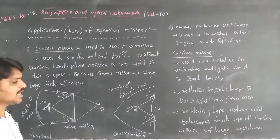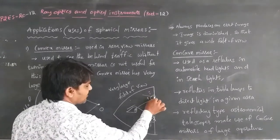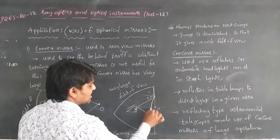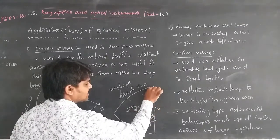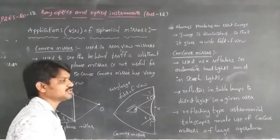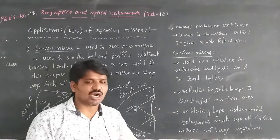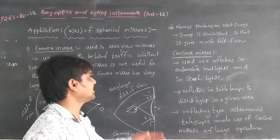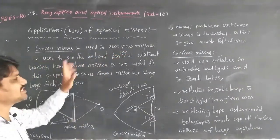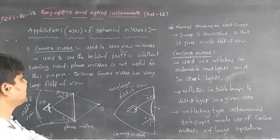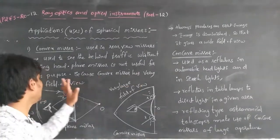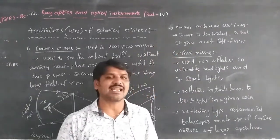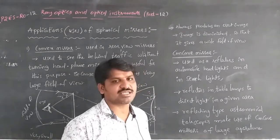In contrast, with a convex mirror the field of view is very large, because the surface bulges outward. The incident rays cover a wide area, giving a large field of view. Additionally, the convex mirror always forms an erect image, which is why it is used in rear-view and side mirrors — to see behind traffic without turning our head. Plane mirrors are not useful for this purpose.